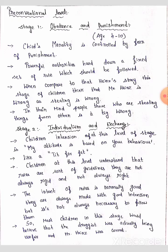Next, Stage 2 is individualism and exchange. At this level, children's attitude is based on the other person's behavior — like a tit-for-tat approach. My attitude is based on your behavior; if you behave a certain way, I respond accordingly. This is considered a great step in this age stage.